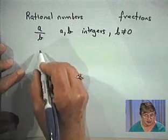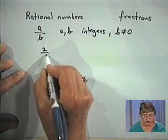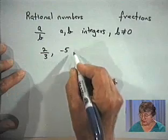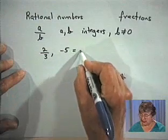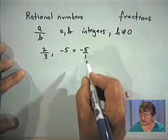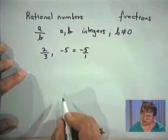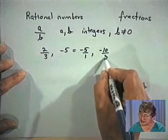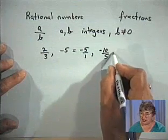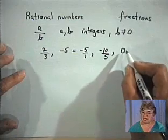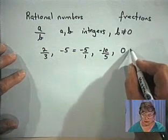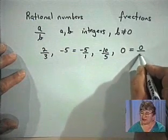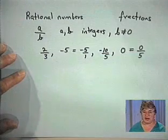Examples of rational numbers are 2/3, negative 5 — because we can write negative 5 as negative 5 over 1, it is a quotient of two integers — and negative 10 over 5. The number 0 is also a rational number because we can write it as 0 over another number, for example 0 over 5.